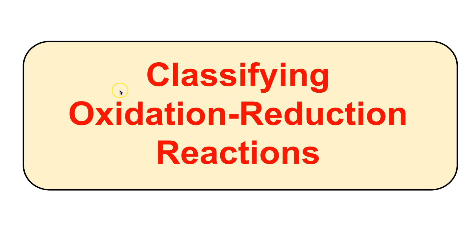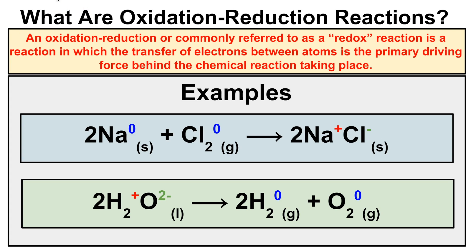Hey you guys, this is Mr. Millings and in this video we are going to learn how to classify oxidation reduction reactions. An oxidation reduction reaction, commonly referred to as a redox reaction, is a reaction in which the transfer of electrons between atoms is the primary driving force behind the chemical reaction taking place. Redox reactions take place whenever electrons are transferred between the atoms in a chemical reaction.